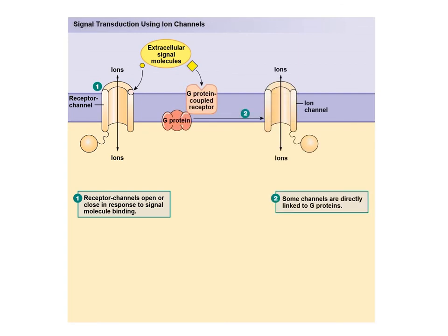We can do a similar thing using a second message and a G protein coupled receptor instead of a receptor channel. The signal affects the G protein, and the G protein becomes the second message leading to a change in membrane permeability. This channel is gated for the G protein, so when the G protein is activated it comes over and affects this channel, and now we have affected membrane permeability.